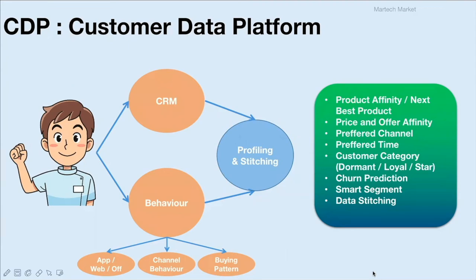Data stitching is about identifying a particular user across various devices and platforms to create a unified view. For example, when a user named Virat visits a website and signs in using a mobile number the first time, then returns from the same device using an email address, we map this data. Because the device ID and name match, we do a probabilistic matching and identify that the mobile number and email ID belong to the same user.